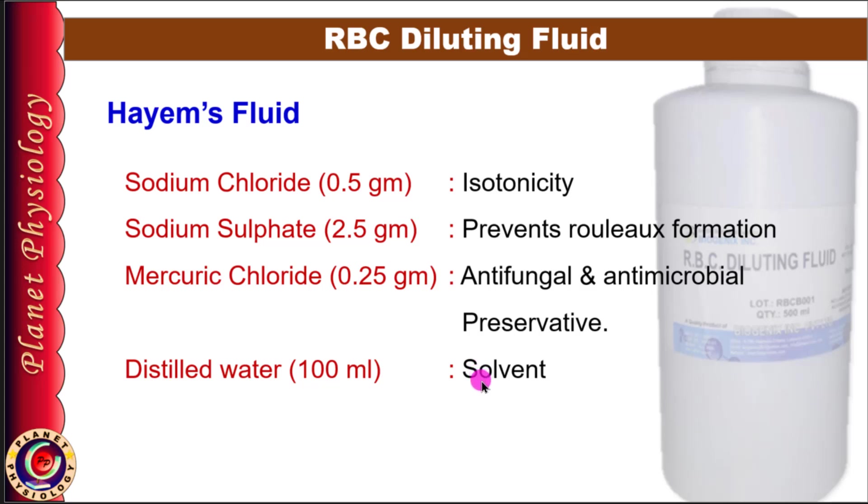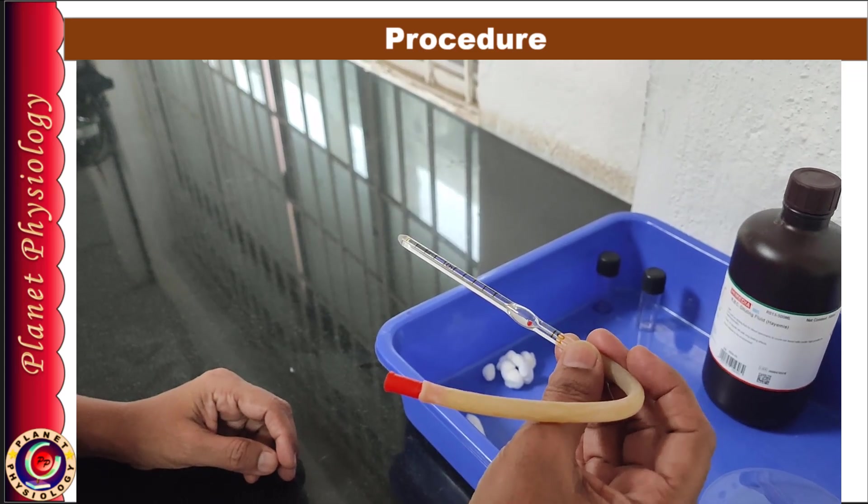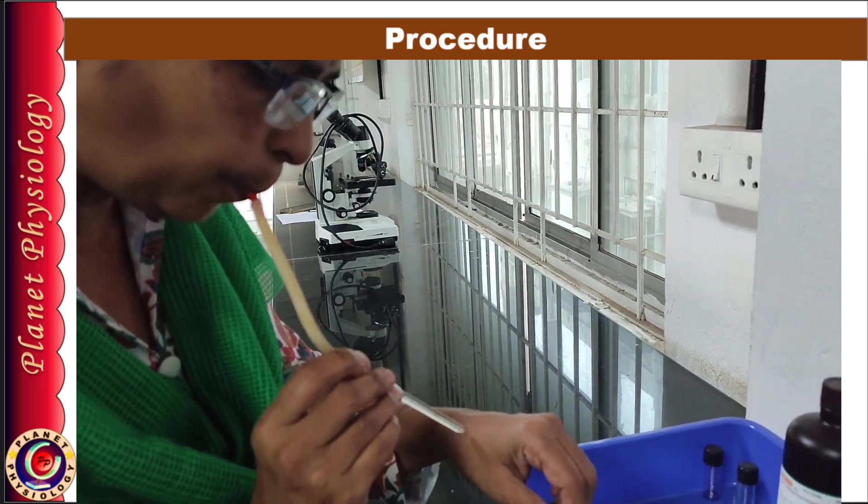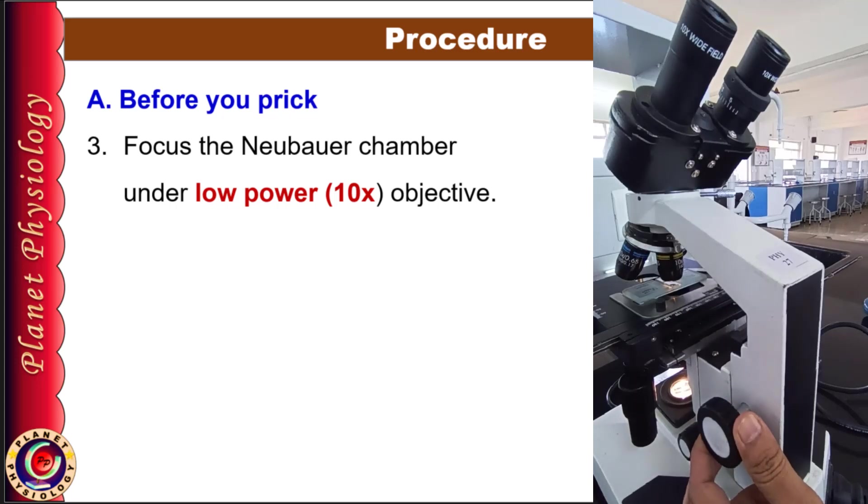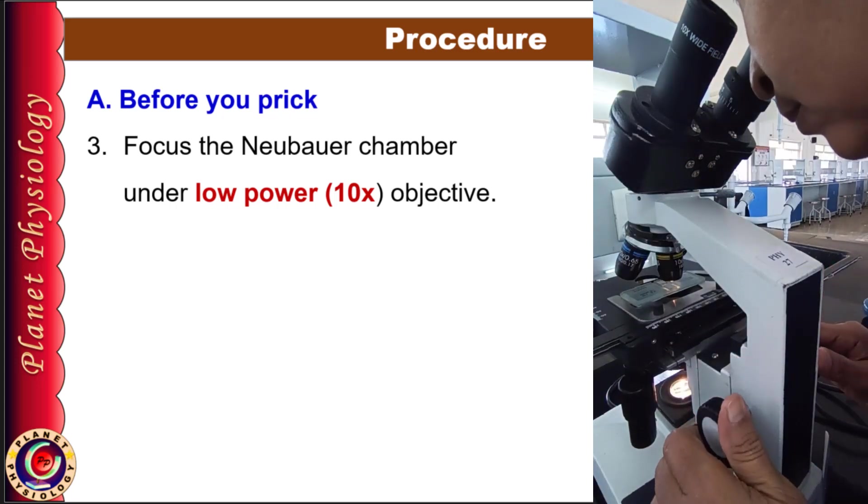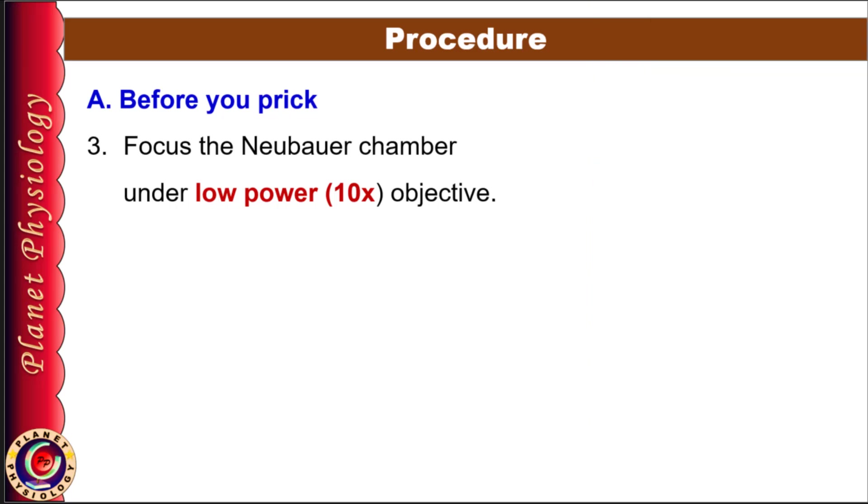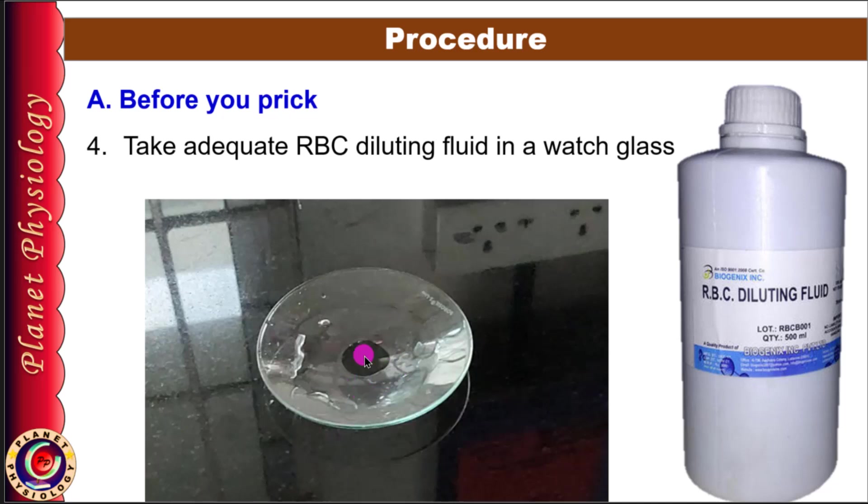Now coming to the procedure. Before taking the finger prick, ensure that the chamber, coverslip, and pipette are clean and dry. Check the patency of the pipette by blowing through it. If you feel an air current on the back of your hand, the pipette is patent. Focus the RBC square under low power (10x objective) then remove it without disturbing any settings. Now take some RBC diluting fluid in a watch glass. This essential step before taking finger prick can prevent blood from clotting within the pipette. Once this background preparation is done,